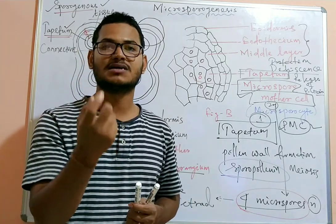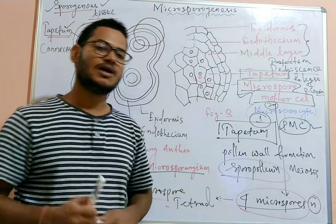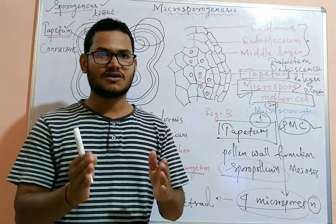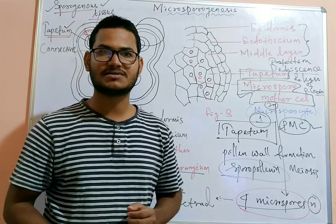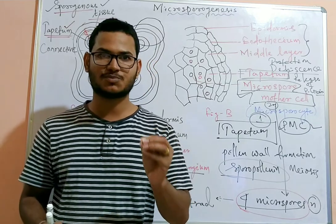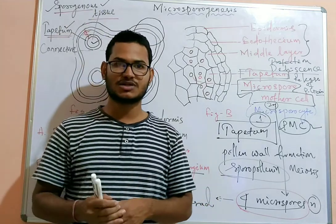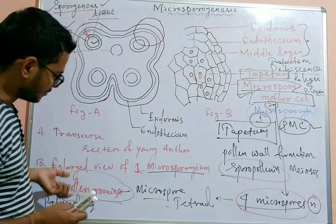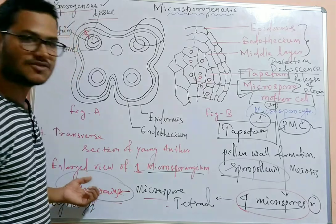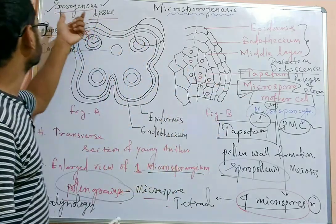Pollen grains are of different types: in dicot plants they are tetrahedral, whereas in monocot plants they are isobilateral. Pollen grains are rich in nutrients and serve as a very good supplement. In several plants, pollen tablets and syrups are used as nutrient supplements, providing sufficient nutrients especially for athletes.